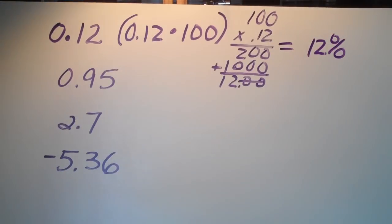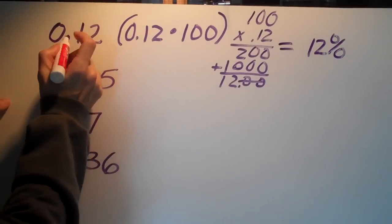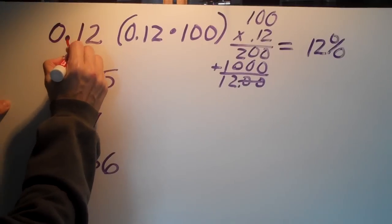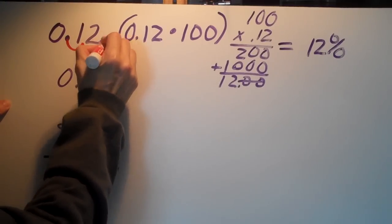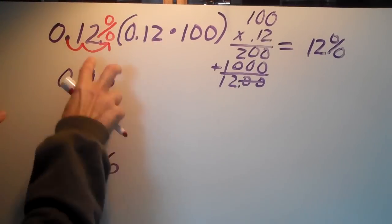Now we don't have to do that long version. Simply, we just remember what we do is we take that decimal and move it two places to the right and add our percent sign. We get the same number, 12 percent.